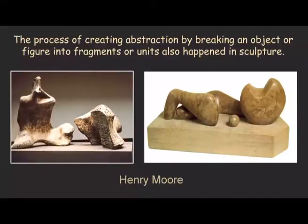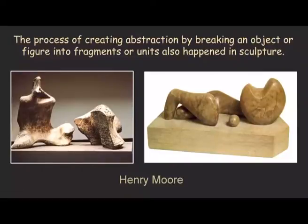The process of creating abstraction by breaking an object or figure into its fragments or units also happened in sculpture, as we have already seen in the previous class. Henry Moore should be considered as one of those sculptors belonging to the early phase of the 20th century who did some hundreds of experiments, dismantling a figure into units to the extent that though you might have a faint recognition of a reclining woman or a warrior, when you look at the details of the sculpture what you find is simply unrecognizable abstract shapes and forms.